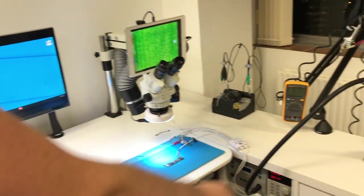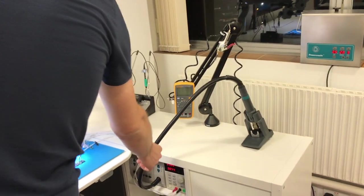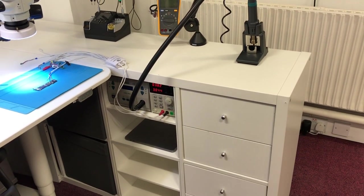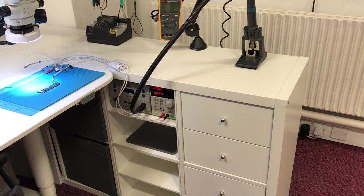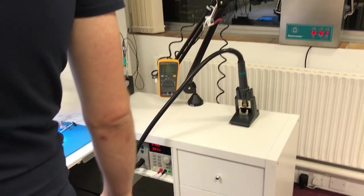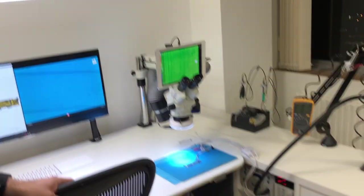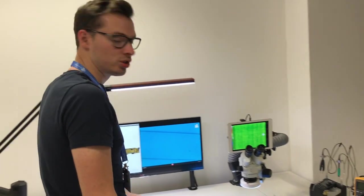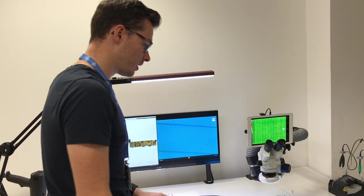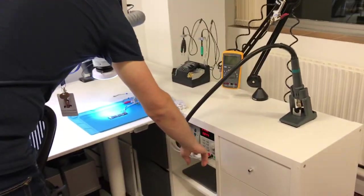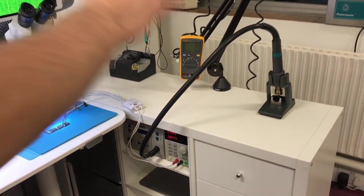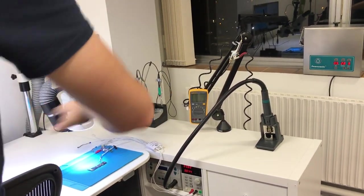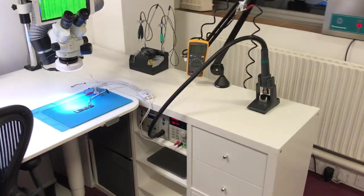On this side here, I have my heat gun. So that's a Quick 861DW. It replaced my Hakko FR-810, which kind of died with the turbine. And on the right of that, I have the power supply. Now, I will say, we only just moved into this new place, so it's not actually fully set up yet. I actually only just set this up as it is now.